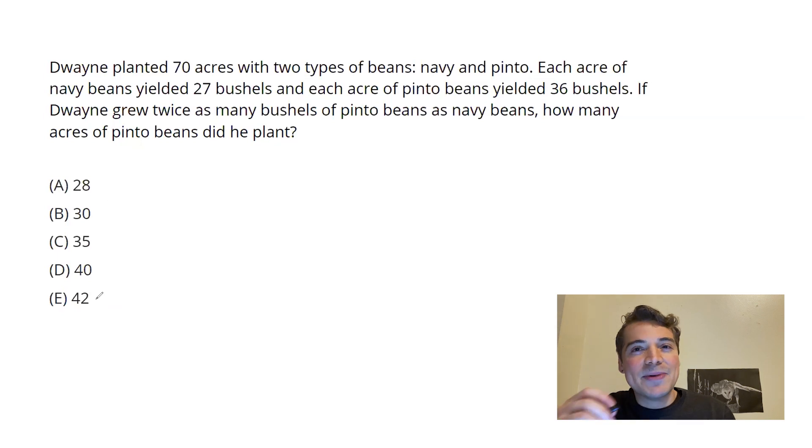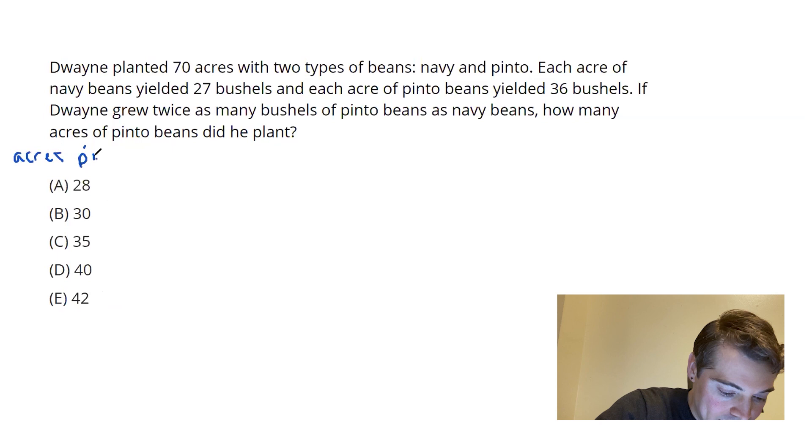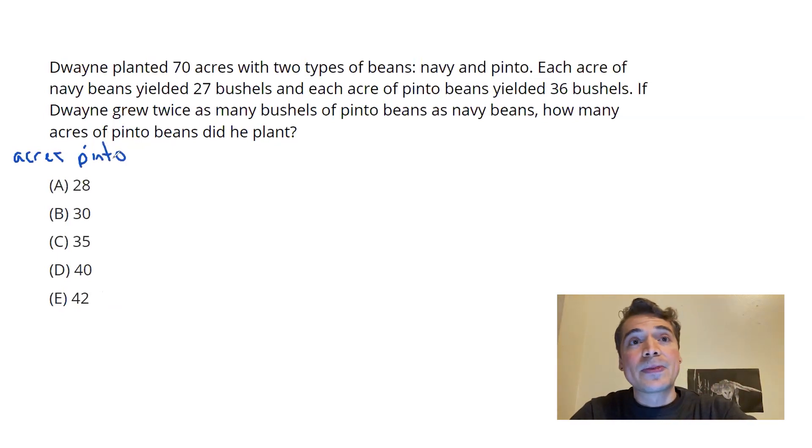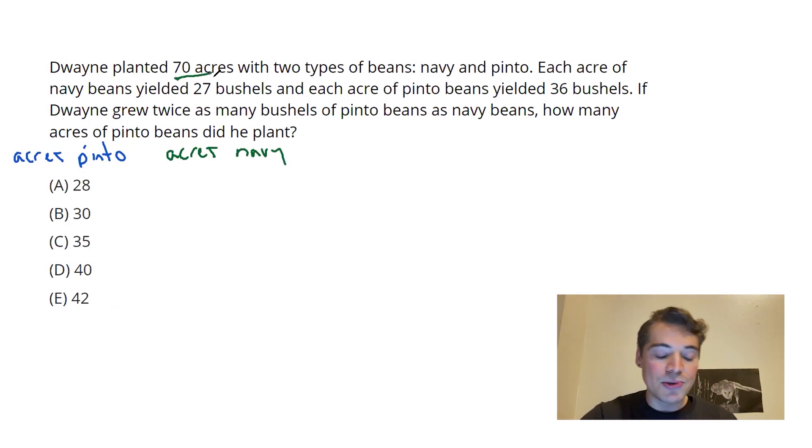Next thing I want to look at is the ultimate question being asked. How many acres of pinto beans did he plant? That implies each answer choice here represents my acres of pinto. If I've got some amount of pinto, I'm going to have some acres of navy. How many? Well, remember, we have 70 total acres.